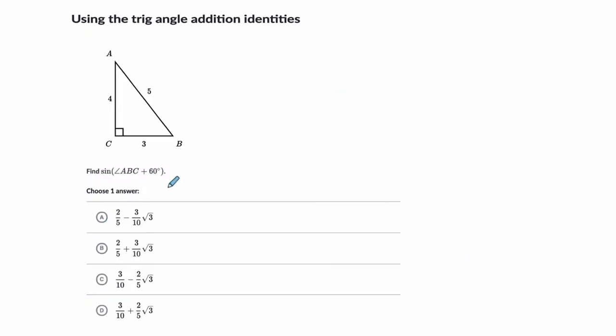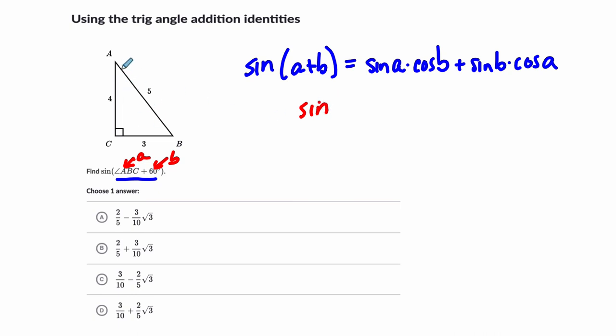Here's the last one. Here we have a sine addition formula. So sine of angle ABC plus 60. The sine addition formula, the sine of A plus B equals the sine of A times the cosine of B plus the sine of B times the cosine of A. And A and B are just referring to the two angles we're looking at. In our case, we'll call angle ABC angle A, and we'll call 60 degrees B. So the sine of ABC, this is this angle here, is the opposite over hypotenuse. That means that this is 4 fifths.